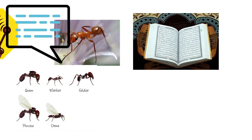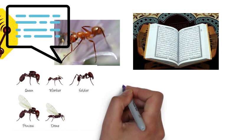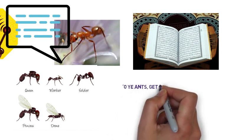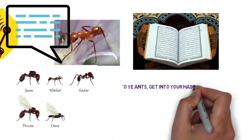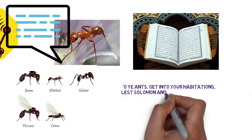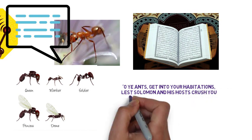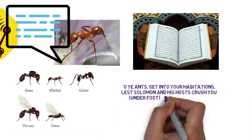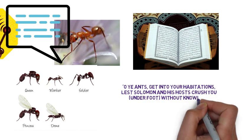Chapter 27, verses 17 and 18: And before Solomon were marshaled his hosts, of jinns and men and birds, and they were all kept in order and ranks. At length, when they came to a valley of ants, one of the ants said, O ye ants, get into your habitations, lest Solomon and his hosts crush you underfoot, without knowing it.